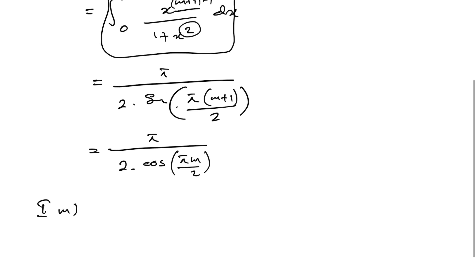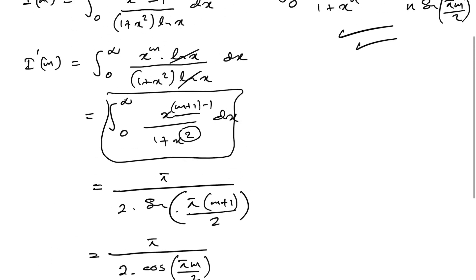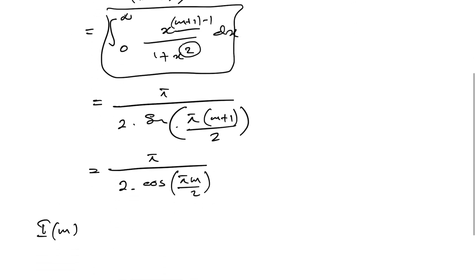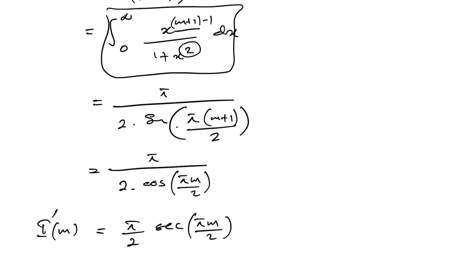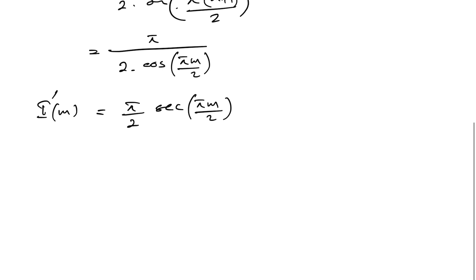So I'(m) is equal to pi over 2 times 1 over cosine of pi·m/2, which means I'(m) equals pi over 2 times secant of pi·m/2.